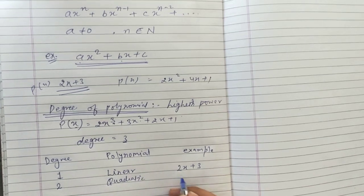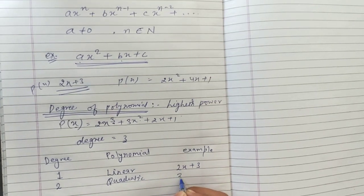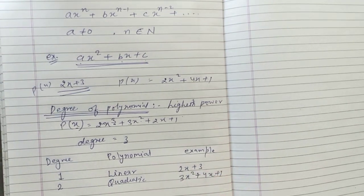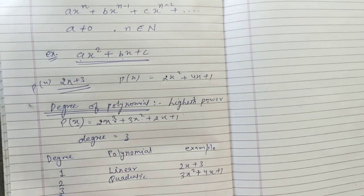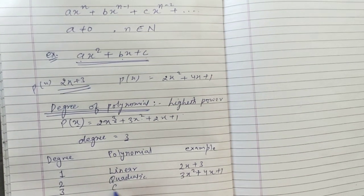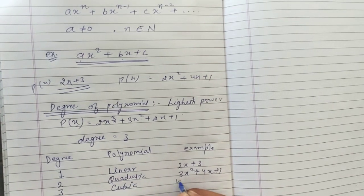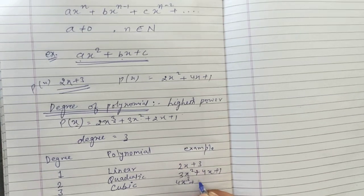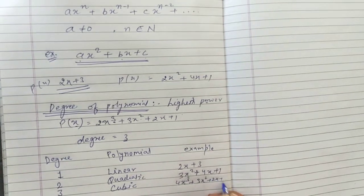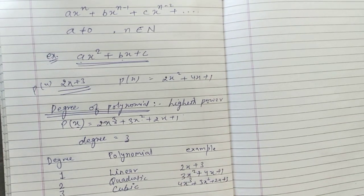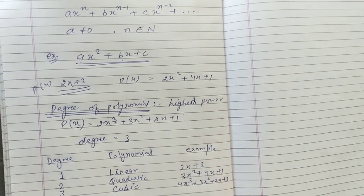An example of a quadratic polynomial is 3x² + 4x + 1. If the degree is 3, it is known as a cubic polynomial. For example, 4x³ + 3x² + 2x + 3 is a cubic polynomial. So degree defines the type of polynomial: degree 1 is linear, degree 2 is quadratic, degree 3 is cubic.